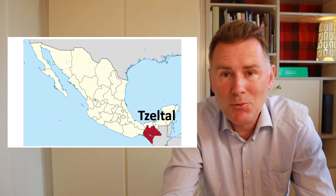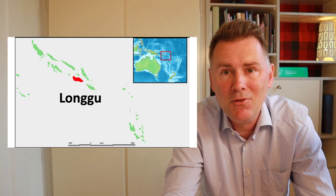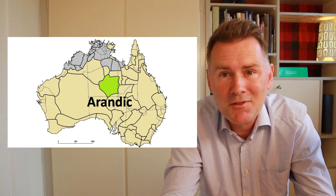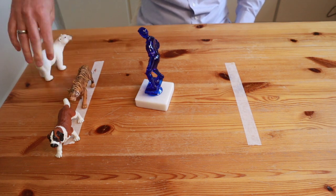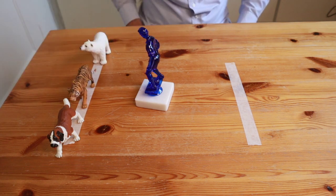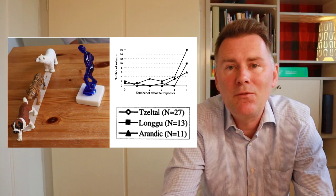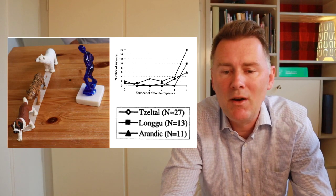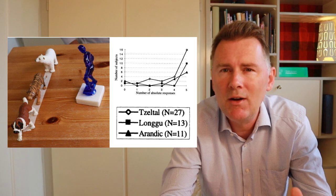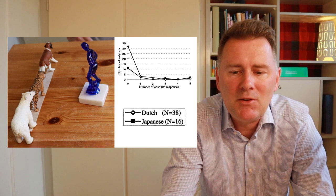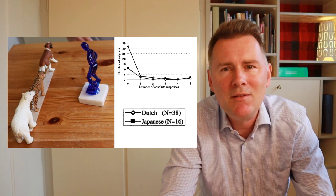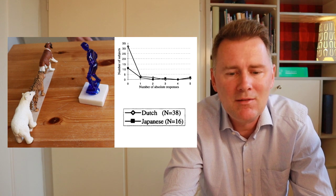Well, speakers of the languages Tzeltal, Longu, and Arandic do it differently. When they are asked to put the animals in a row, they have the dog on the left, followed by the tiger and by the polar bear. Here we see a graph with the results. Speakers of Tzeltal, Longu, and Arandic overwhelmingly arrange the animals in the way you see here, whereas speakers of Dutch and Japanese tend to arrange them like this. Now, why is there this difference?